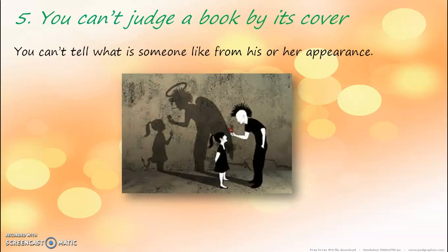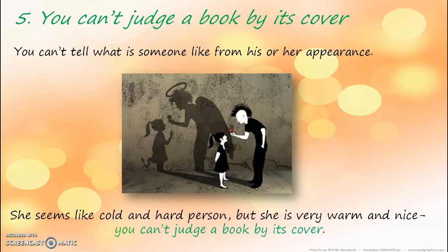The fifth idiom is 'you can't judge a book by its cover.' It means you can't tell what someone is like from his or her appearance. As in the example: she seems like a cold and hard person but she's very warm and nice. You can't judge a book by its cover.